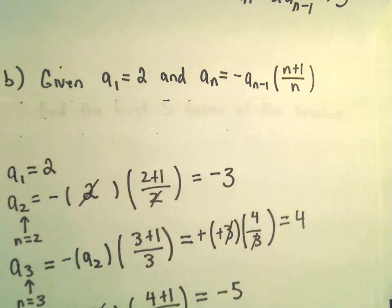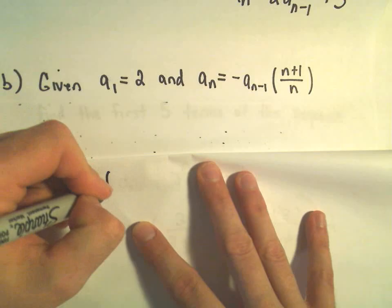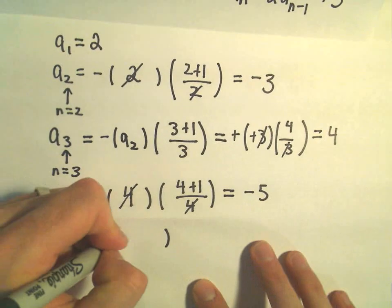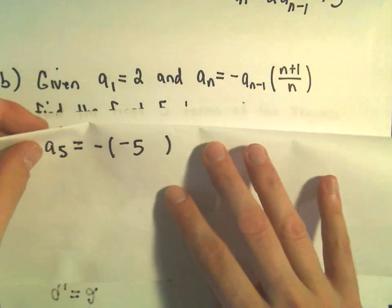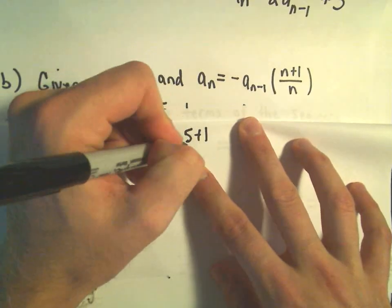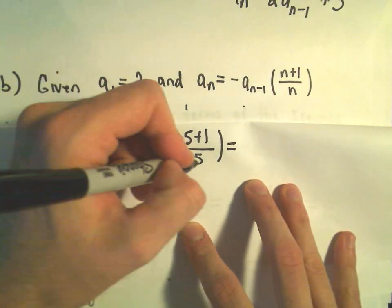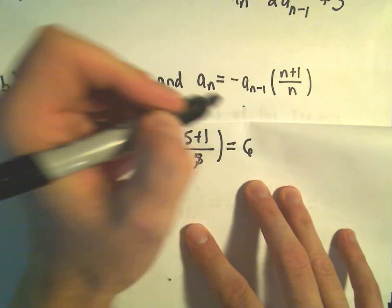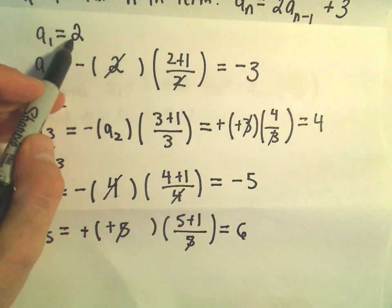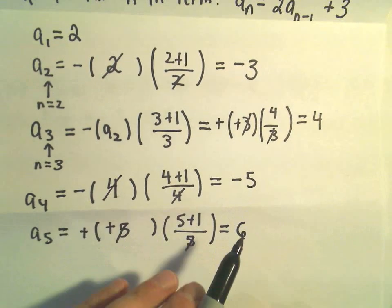Last but not least, we can compute a sub 5. It says we get the negative of our a sub 4 value, and a sub 4 was negative 5. So we get the negative of negative 5, then everywhere there's an n we plug in 5, giving us 5 plus 1 over 5. The two negatives make a positive, the 5s cancel, and we're left with 5 plus 1, which is 6. So our first five terms are 2, negative 3, positive 4, negative 5, positive 6 — the values are just increasing while the signs alternate.